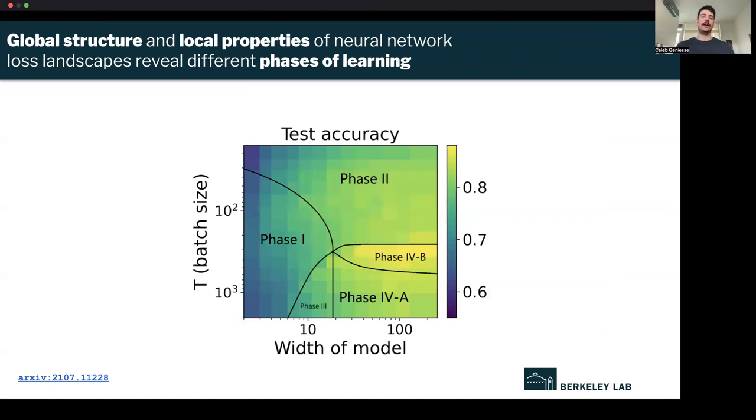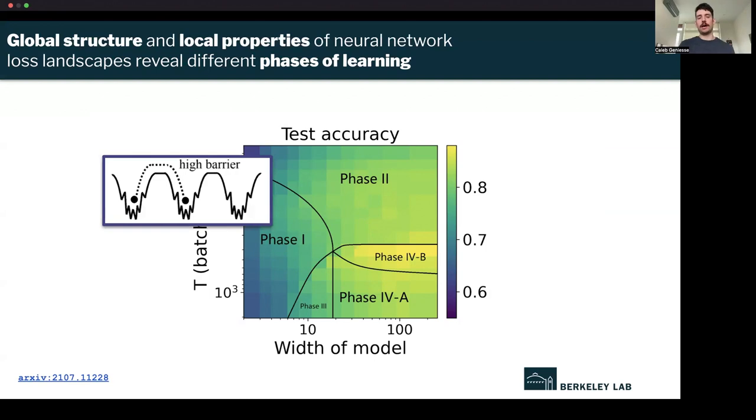You can take different models trained across various hyperparameters. What we're looking at here is the width of a model on the x-axis and the batch size on the y-axis. This is what we call a temperature parameter or how fast the training of your model is. We're looking at test accuracy, and this is the generalization performance. We can see that there's different phases of learning that capture different levels of test accuracy. We can see that our toy models map onto this surface.